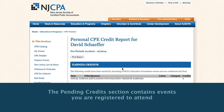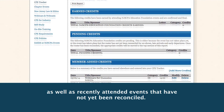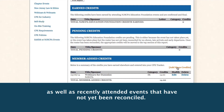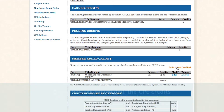Here's your personal CPE credit report. You'll see Earned Credits, Pending Credits, and finally, Member Added Credits — this is where you can add some of your own. Go ahead and click Add More Credits.